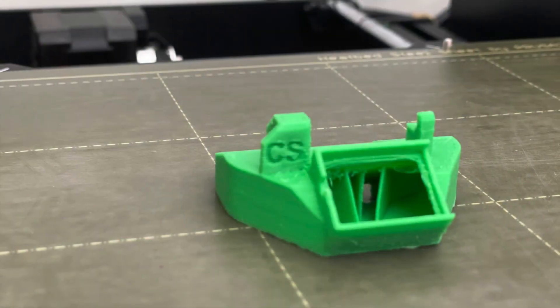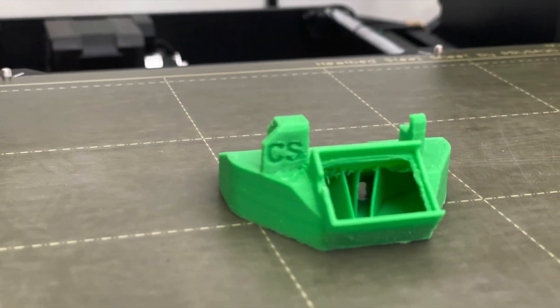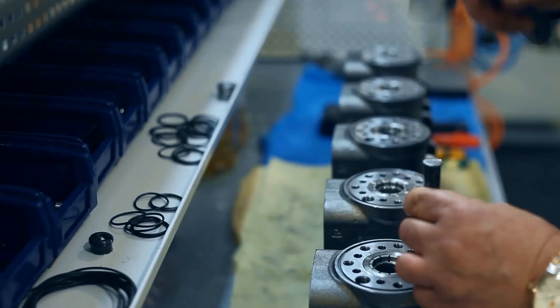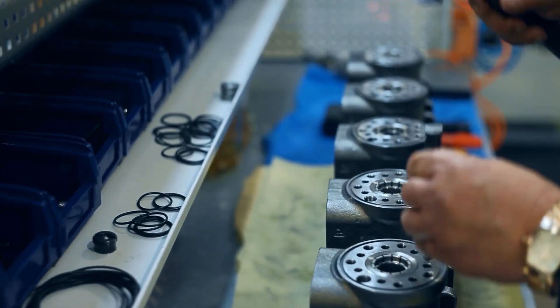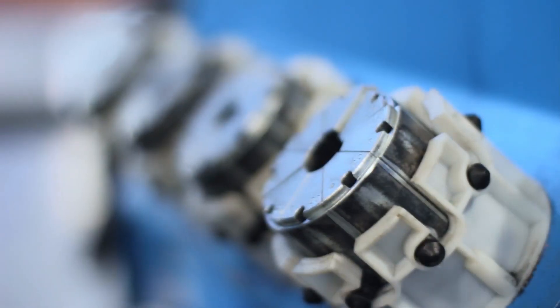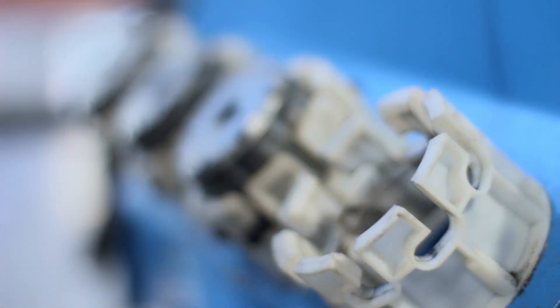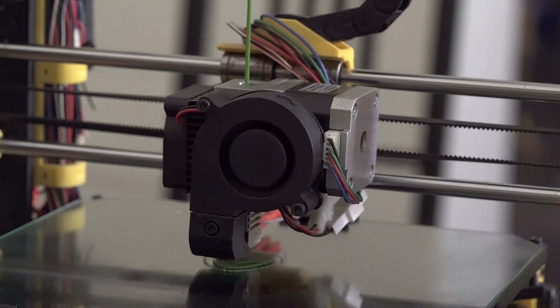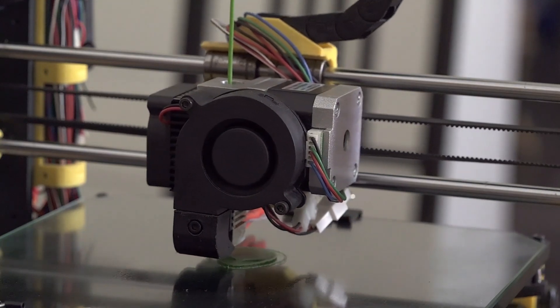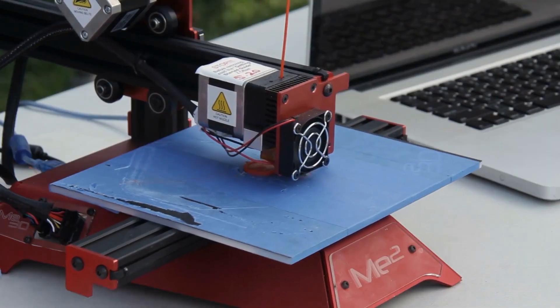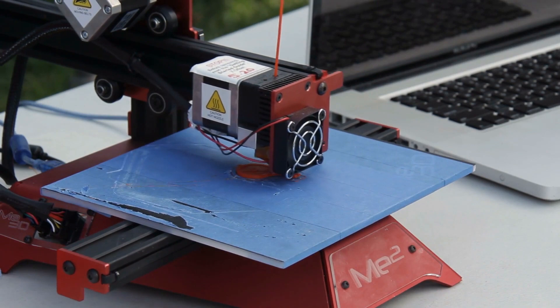Another area where 3D printing is making a significant impact is in the production of spare parts. With traditional manufacturing methods, it can be difficult and expensive to produce small quantities of spare parts for older equipment. 3D printing, however, allows companies to produce spare parts on demand, reducing the need for large inventories and improving maintenance processes.